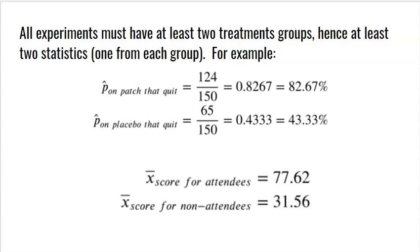Here's an example. We have 300 people — 150 wear a nicotine patch for six months and 150 wear a fake placebo patch. At the end, we ask how many quit smoking. For people who wore the nicotine patch, 124 out of 150 quit smoking — that's 82.67%. Of the people using the placebo patch, 65 quit smoking — that's 43.33%. The question now is: is this a significant difference? Does this difference prove that the nicotine patch gives you a much greater chance to quit smoking? It's not as simple as saying 82 is bigger than 43 — it's much more statistical.